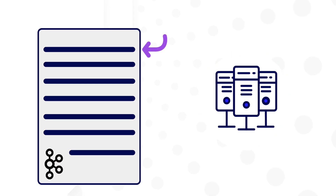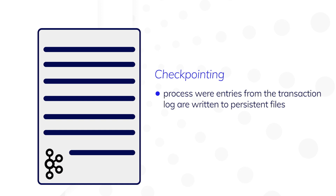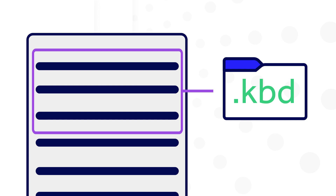When starting up a recovery site, all transactions in the Kafka transaction log will need to be replayed. One way to reduce the time it takes to replay the transaction log is checkpointing. Checkpointing is a process by which entries from the transaction log are written to persistent files called KDB files. These files are then backed up along with your file system. In the event of a major incident, the only transactions that will need to be replayed at the recovery site are those that occurred after the last checkpoint.